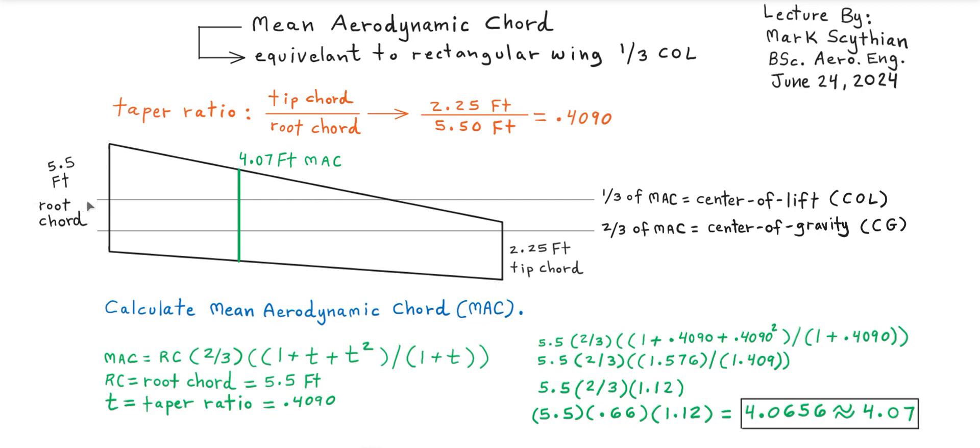So now we can apply the one-third of mean aerodynamic chord as the center of lift COL and our center of gravity at two-thirds of the mean aerodynamic chord, thus identifying the COL and CG respectively.